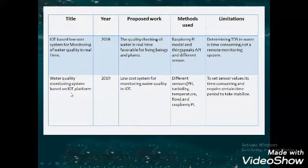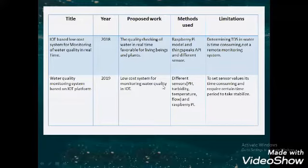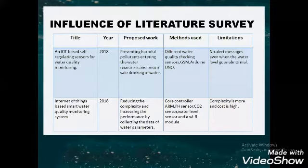The last paper is 'Water quality monitoring system based on IoT platform,' published in 2019. The objective is low-cost monitoring of water quality in an IoT environment — the same objective as ours. Components include pH sensor, turbidity sensor, temperature sensor, and Raspberry Pi, which we are replacing with an Arduino microcontroller. The limitation is that setting sensor values is time-consuming and requires a certain time period to stabilize — which is not a problem in our project. The main objective of doing a literature survey is to analyze previous papers, find out their limitations, and upgrade our project from the previous ones without repeating the same mistakes.